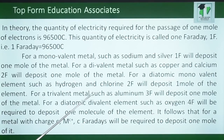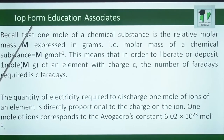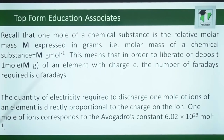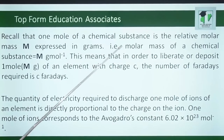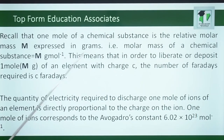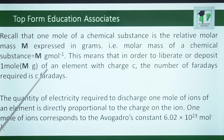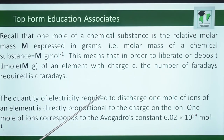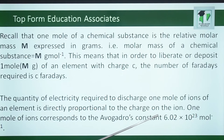It follows that for a metal with charge C (MC+), C Faradays will be required to deposit 1 mole of it. Recall that 1 mole of a chemical substance is the relative molar mass M expressed in grams; that is, the molar mass equals M grams per mole. This means that to liberate or deposit 1 mole of an element with charge C, the number of Faradays required is C. And 1 mole of ions corresponds to Avogadro's constant, which equals 6.02 times 10 to the power of 23 per mole.